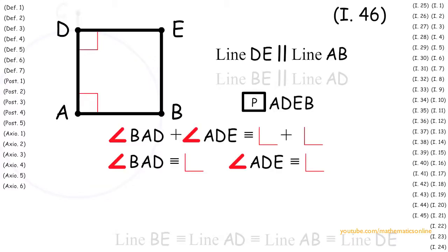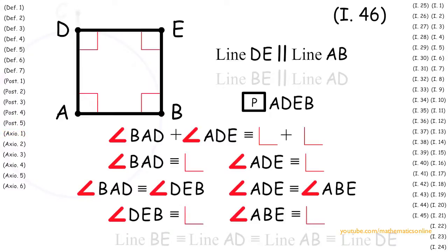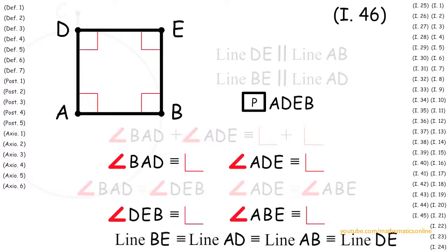Now since ADEB is a parallelogram, by Proposition 34 the opposite angles are congruent. Therefore angle BAD is congruent to angle DEB and angle ADE is congruent to angle ABE. So by Axiom 1 we can show that all angles are right angles. Now since ADEB is a parallelogram that has all of its sides congruent and all the interior angles are right angles, then by definition 6 ADEB is a square. Therefore we have proven that with any given line we can always construct a square.